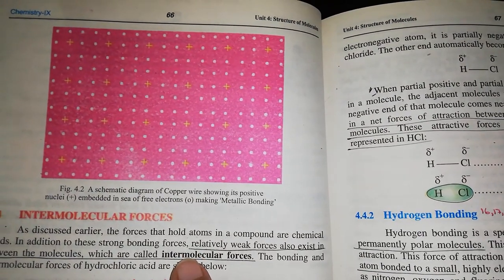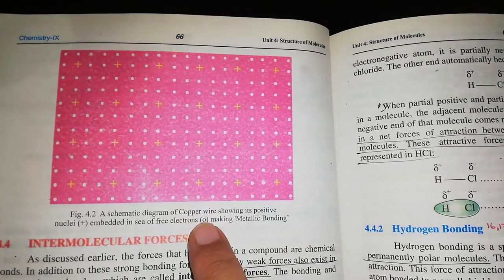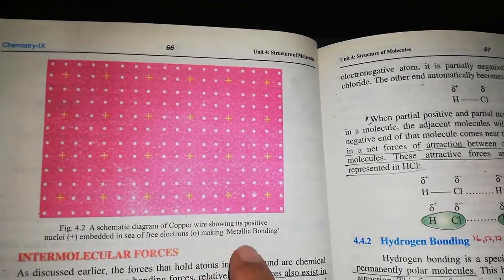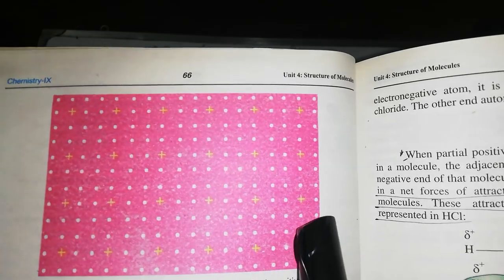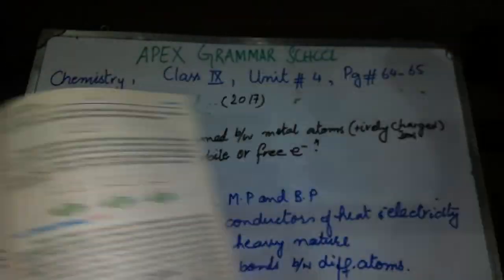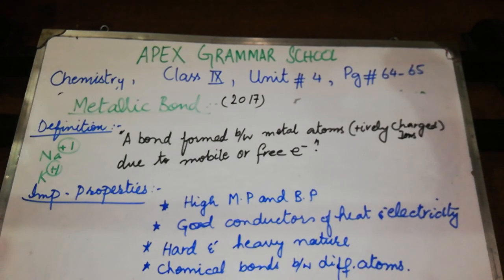You can see in your book on page 66 there is a schematic diagram of a copper wire showing its positive nuclei embedded in a sea of free electrons. The plus signs represent the positively charged metal ions and the dots represent the free electrons — the metal ions are embedded in these free electrons, which is what makes up the metallic bond. This was all for today. I hope you are practicing more and more. If you have any questions you can ask on WhatsApp and I will answer your queries. Till then, stay safe. Allah Hafiz.